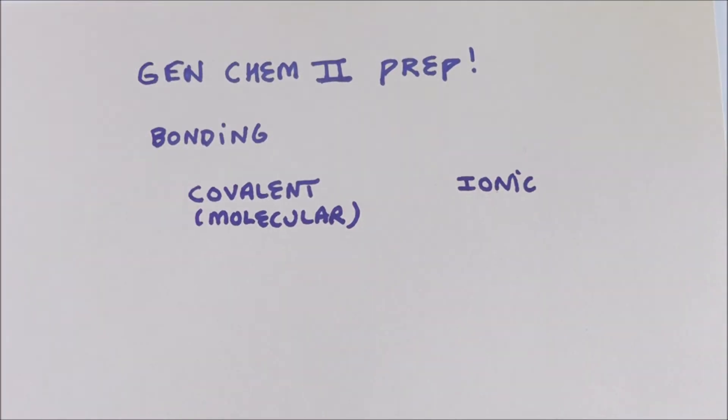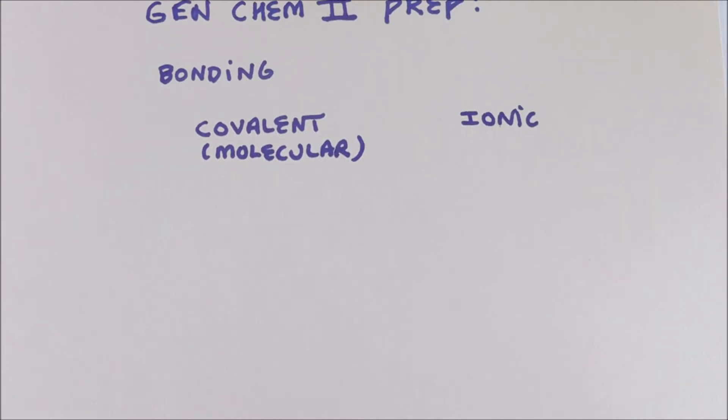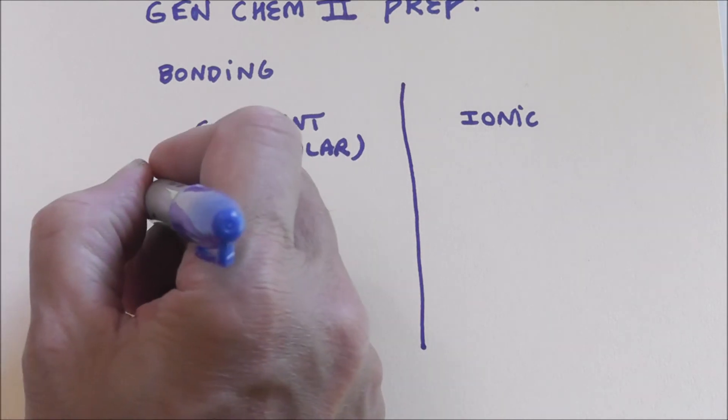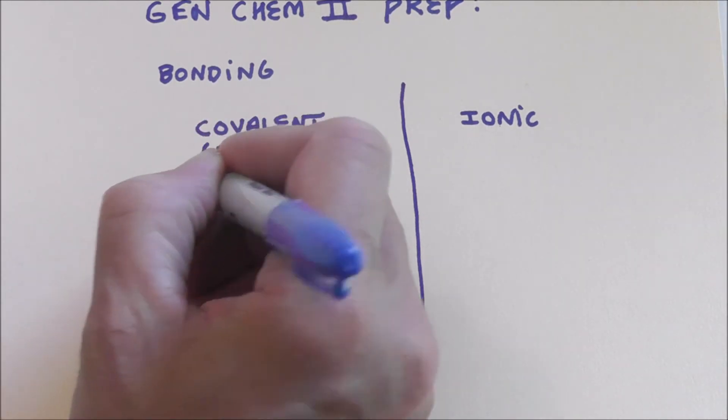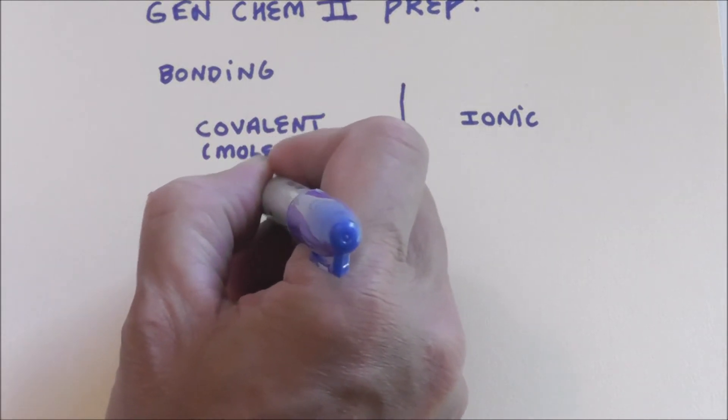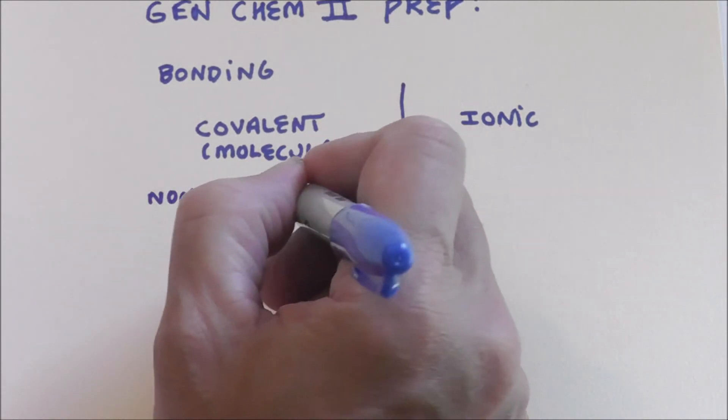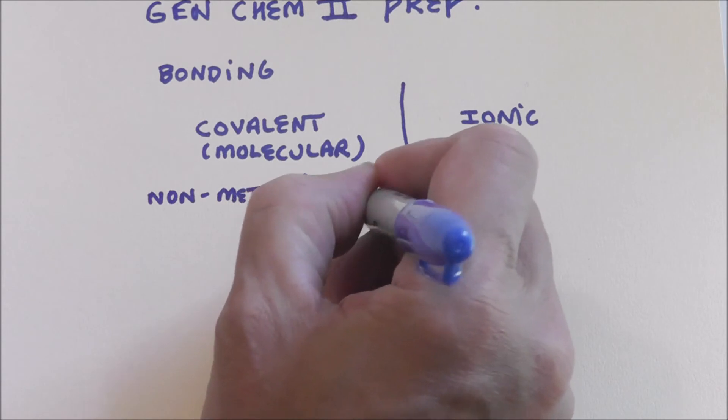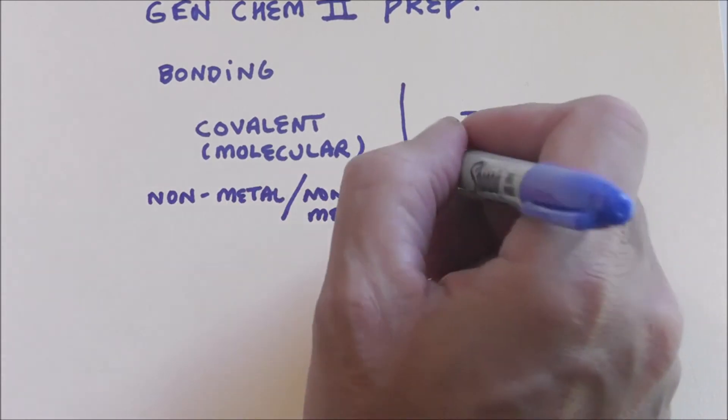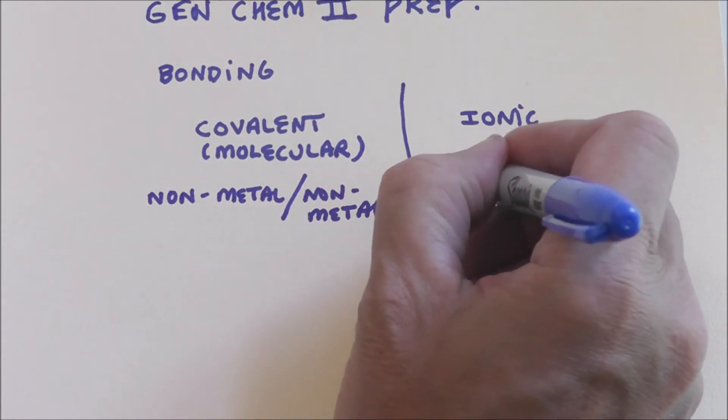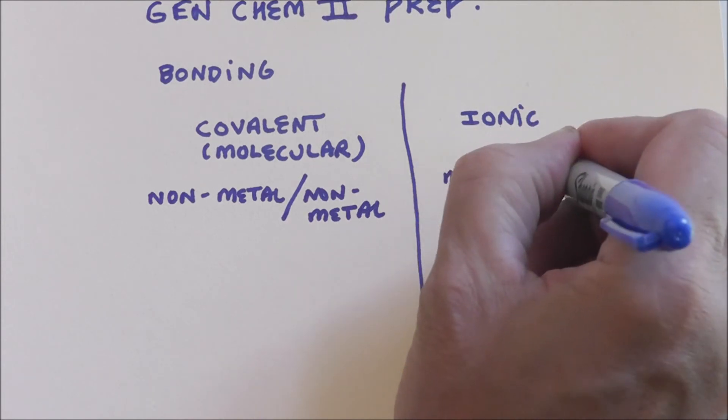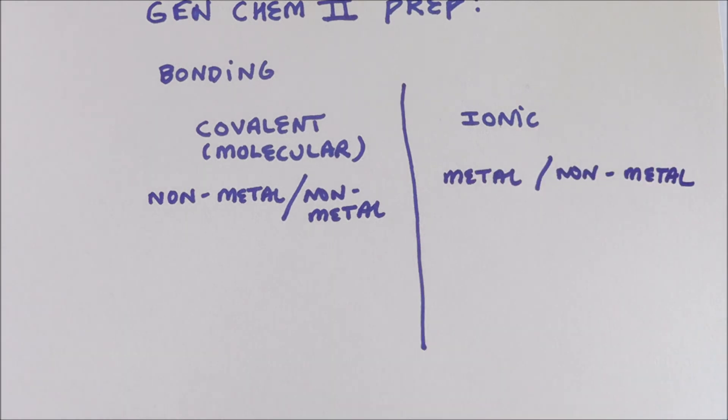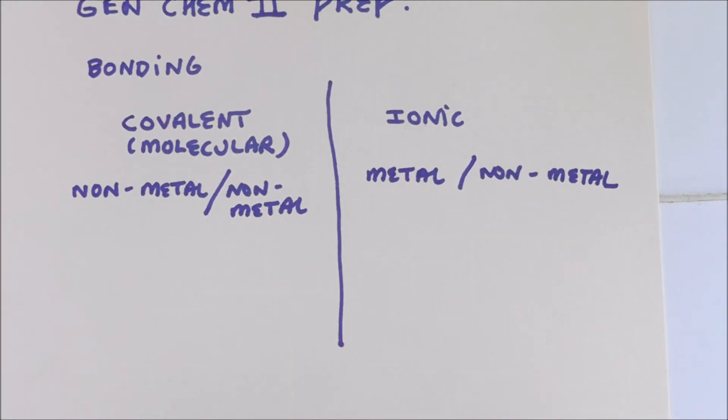Then there's ionic. Is it ringing bells? Great. So, there's a couple ways to look at this. Covalent is non-metal slash non-metal. Ionic is metal non-metal. Those are the two ways you can kind of think about those two kinds of bonding.